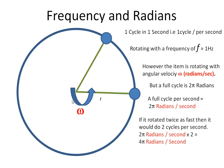Now let's say we rotate the item twice as fast. So it's going to do two cycles in one second. So the angular velocity would be two pi radians per second multiplied by two, because we've done two cycles in one second. That would give us four pi radians per second.